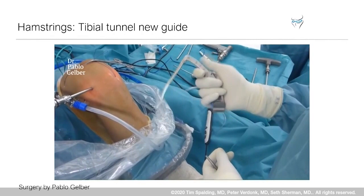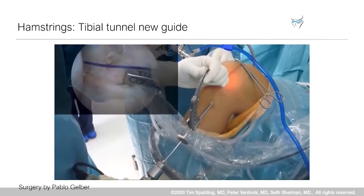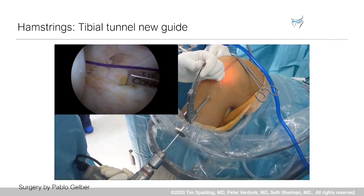The tibial guide is a one-handed device that can be adjusted to the appropriate tunnel length before inserting the tibial wire, using the tip guide.